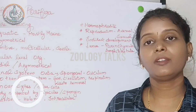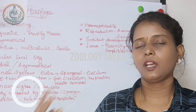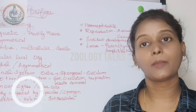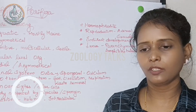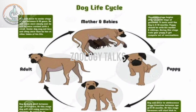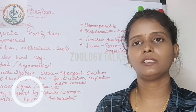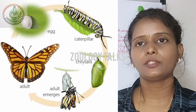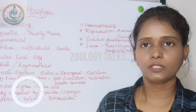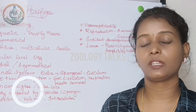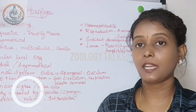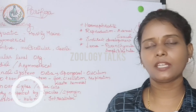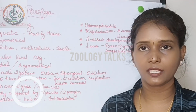Development in Porifera is indirect development. In indirect development, the organism passes through a larval stage before becoming an adult — similar to how a caterpillar transforms. The larva looks very different from the adult organism. There are different larval varieties found in indirect development.